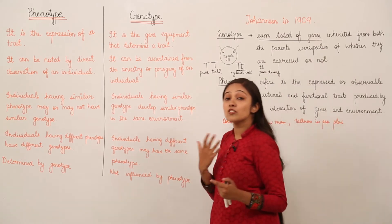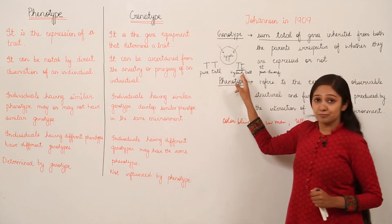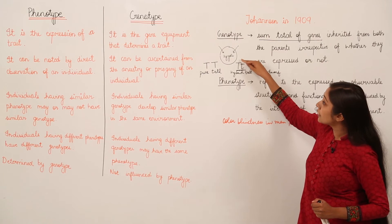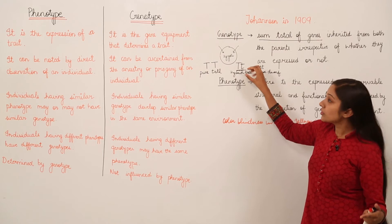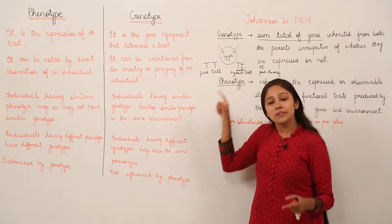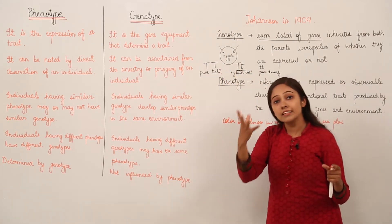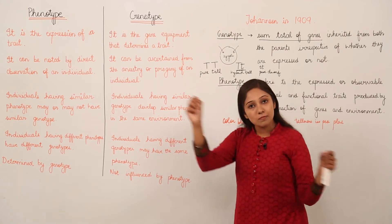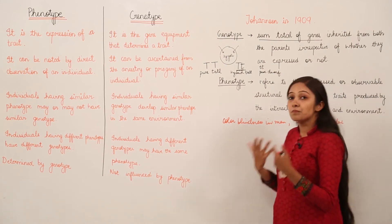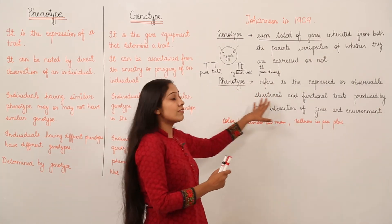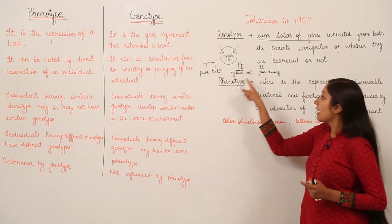When we talk about the interaction of genes, consider that here we have two different genes — one encoding for tallness and one for dwarfness. Their combination produces a hybrid tall plant, but when you observe this plant from outside with your eyes, you will see a tall pea plant. So the phenotype is the expressed or observable structural and functional trait produced by the interaction of genes and their environment.